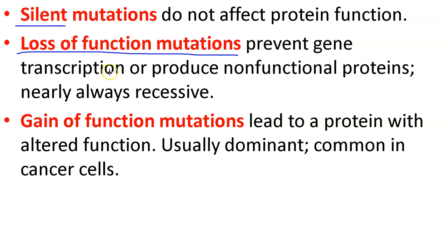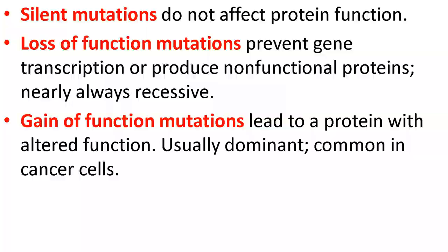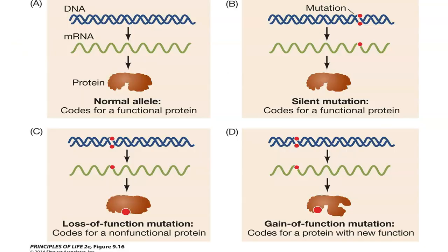Loss of function mutations prevent gene transcription or produce non-functional proteins — like cystic fibrosis, where we've lost the ability to do our job. These are nearly always recessive, though sometimes dominant. Gain of function mutations can lead to a protein with an altered function — something's different in the protein. Here's an image showing normal protein, silent mutation with the same functional protein, loss of function where the active site is blocked, and gain of function where we now have different active sites doing different things. So that could be good or bad.